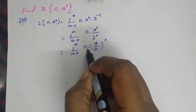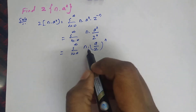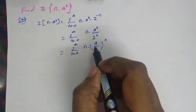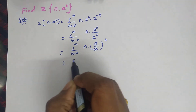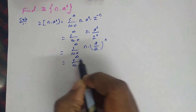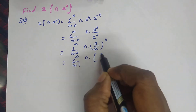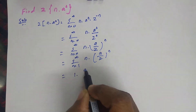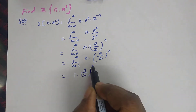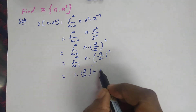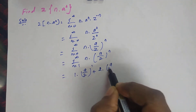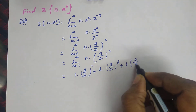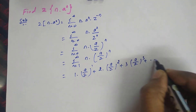Now we are going to give values for n. The first value is 0, and 0 into anything will become 0, so we can start our n value from 1. That gives us sigma n equal to 1 to infinity of n into a by Z whole power n. For n=1: 1 into a/Z power 1; for n=2: 2 into a/Z power 2; for n=3: 3 into a/Z power 3, and so on.